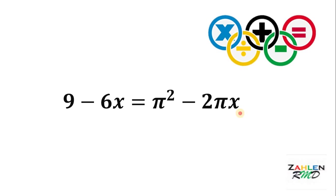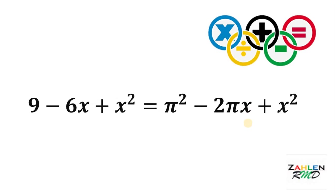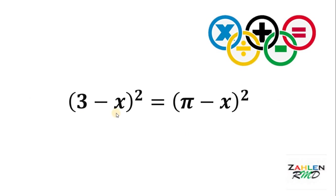Next, let's add x squared on both sides. Notice that both sides of this equation are now factorable. The left hand side can be factored as 3 minus x multiplied by 3 minus x, and on the right hand side it can be factored as pi minus x times pi minus x. Therefore, we have the quantity 3 minus x squared equals the quantity pi minus x squared.